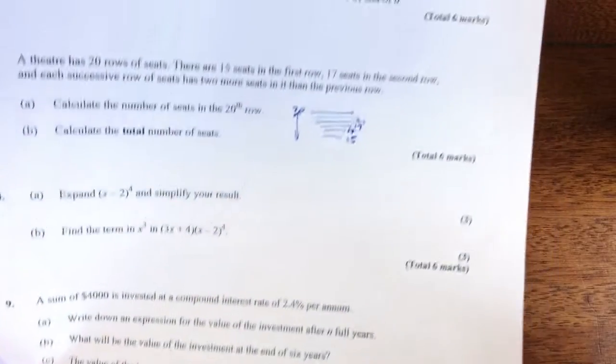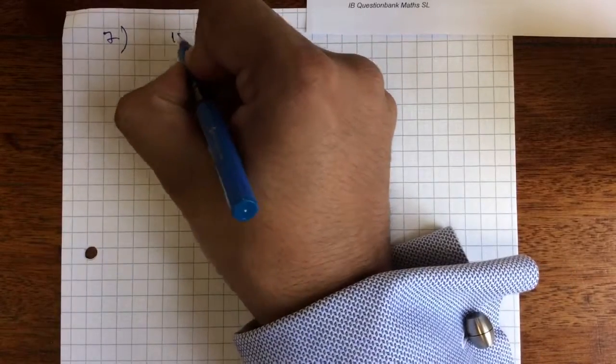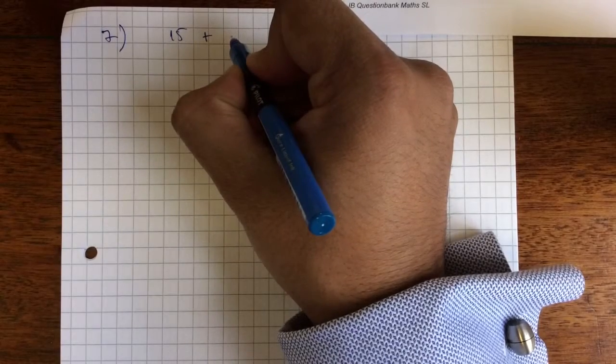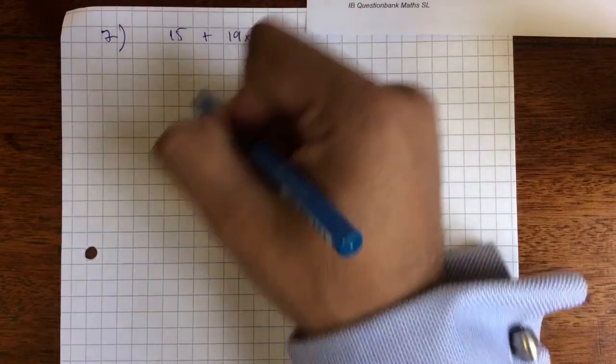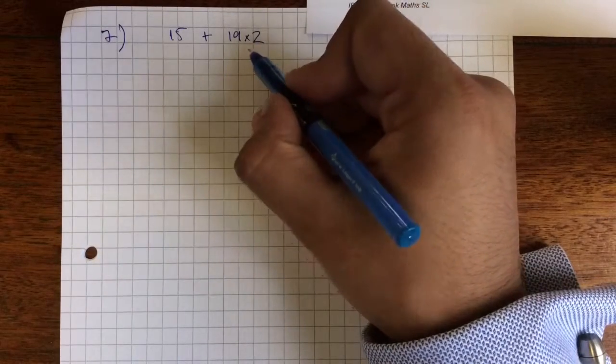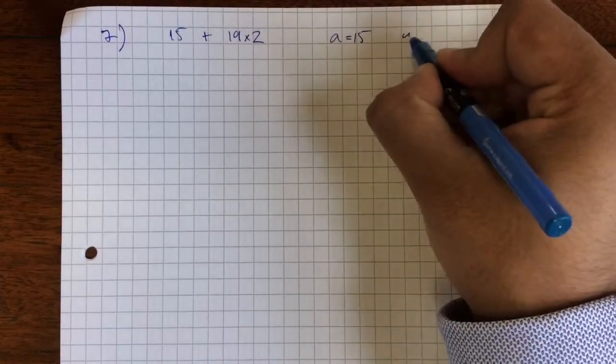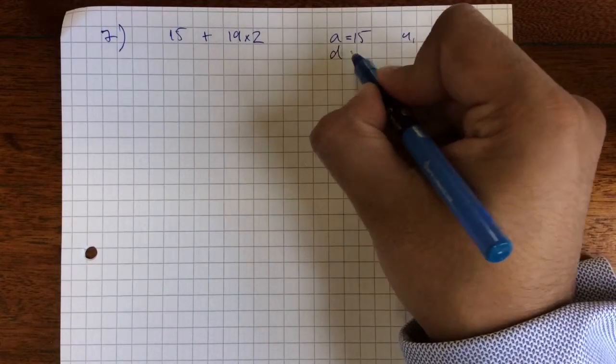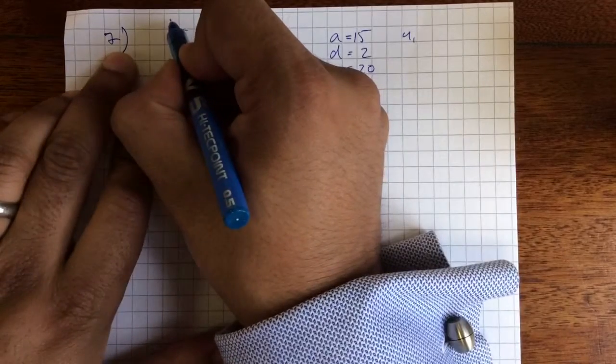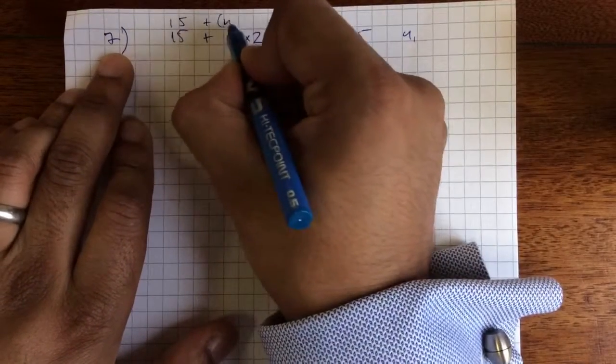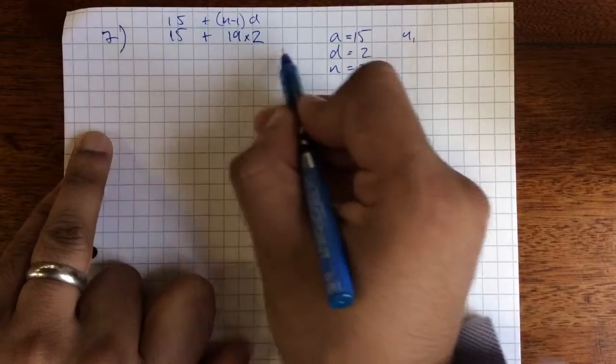Okay, so calculate the number of seats in the 20th row. So, in the 20th row, you've got 15 plus 19 times 2, because you've got 19 differences you're going to add on from the first to the 20th row. And what I've realized here is that my first term A is equal to 15, or U₁. You can call it U₁ if you want. I know that my D is equal to 2, and for this, my N is equal to 20. It's quite good to state those. And just working backwards, I could say that that was 15 plus N minus 1D, or A plus N minus 1D.